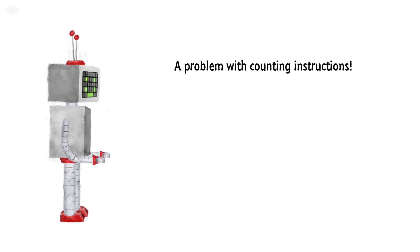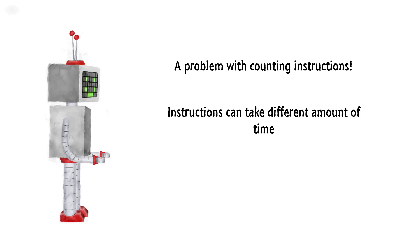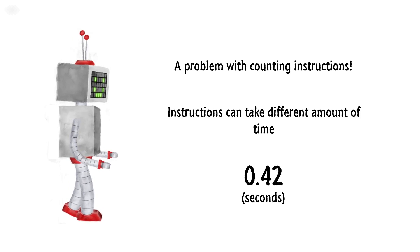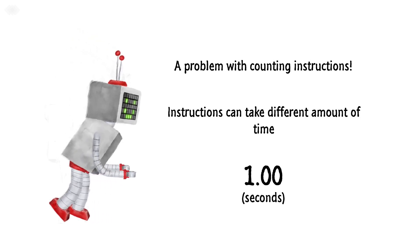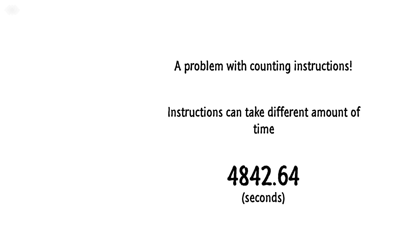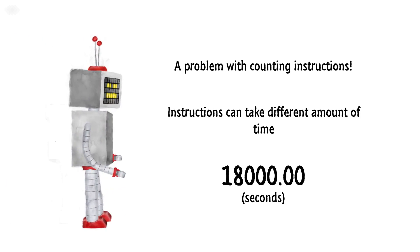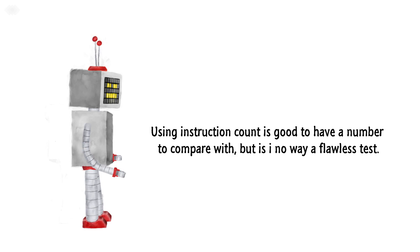However, there is a problem with just counting instructions: each instruction can take a different amount of time. For example, if you tell a robot 'take one step,' it takes about a second. But if you tell it 'run a marathon,' it will take five hours. Both are one instruction to the robot but very different in time. Shaders are no different. Looking at the instruction count will give you a number to compare to, and it's better than nothing, but it's in no way a flawless test.